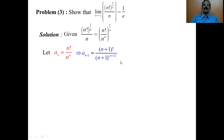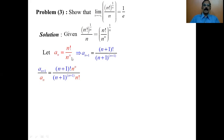The ratio a_{n+1} by a_n: whatever is written in blue is a_{n+1}, and whatever is in red is a_n. Remember that a_n is n factorial divided by n to the power n. Since a_n is in the denominator, we write its reciprocal — that is, we write it upside down: n to the power n goes up and n factorial comes down.